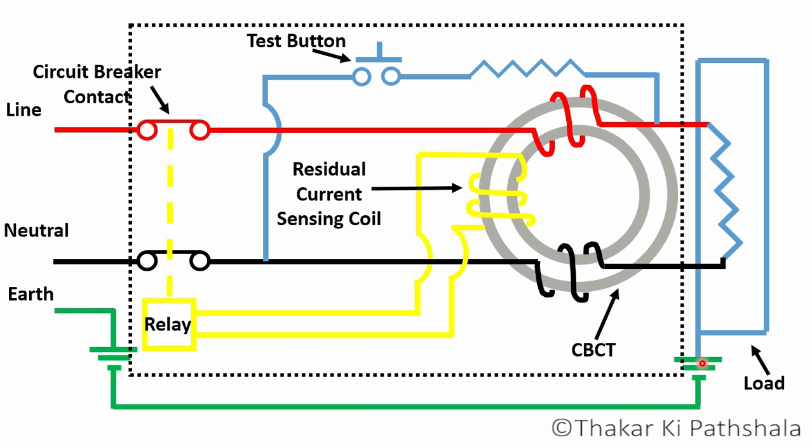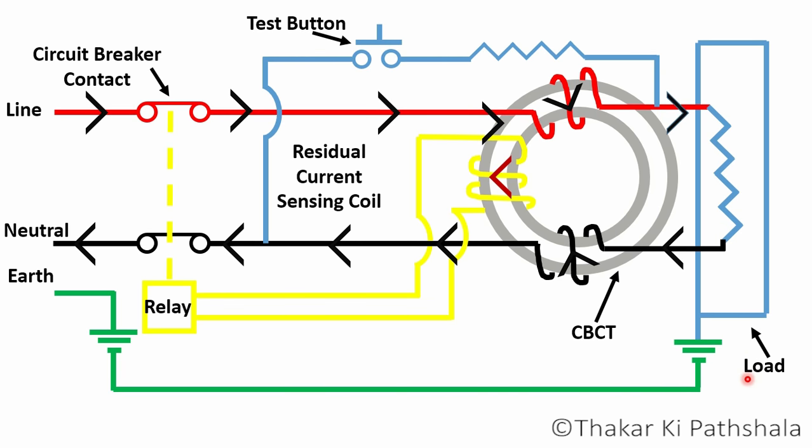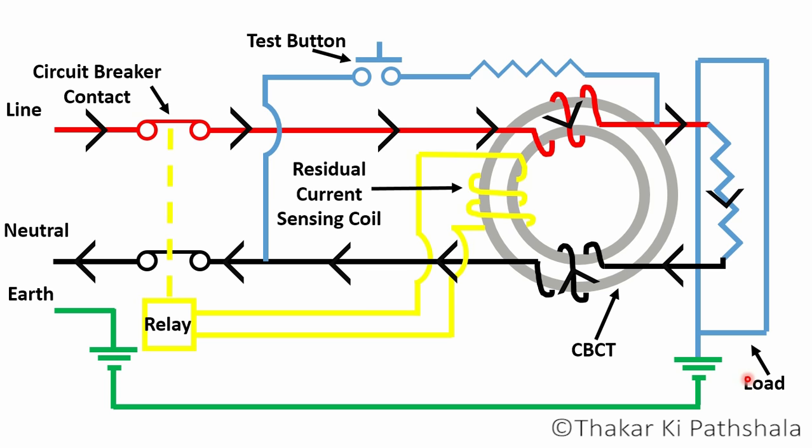Let's take the first scenario in which everything works fine. There is no fault. In this case, the current entering from the line conductor will be equal to the current leaving from the neutral conductor, but the direction of both will be opposite. So as per Fleming's law, the flux will induce in the core. But as the magnitude is the same and the direction is opposite, they will eliminate the effect of each other. So there will be no residual flux in the core of CBCT transformer. So no flux will link to the residual current sensing coil, and the system is working just fine.